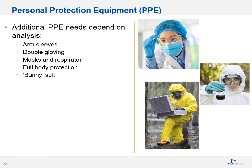Some examples of additional PPE include using arm sleeves to prevent injury or debris contamination. Double gloving — putting a glove on top of a glove — is quite common when using toxic substances such as HF. If you're working in a high dust, bacterial, or antibiotic environment, you might need a mask and respirator. You might even need full body protection for field work. In a semiconductor environment, you will likely need what's called a bunny suit — a full body suit.